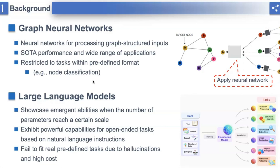In recent years, graph models such as graph neural networks have achieved strong performance on a wide range of real-world applications. Despite their success, graph models are restricted to tasks within a predefined format, such as node classification. While large language models like ChatGPT show powerful zero-shot and instruction-following capabilities and have transformed diverse fields, especially for open-ended tasks.